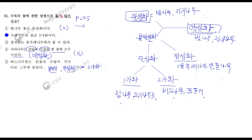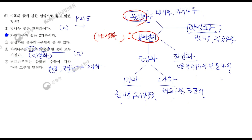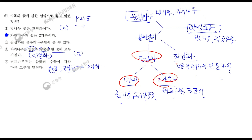그렇기 때문에 1번은 일단 맞고요. 완전화와 불안전화, 그 중에서 불안전화는 꽃받침, 꽃잎, 암술, 수술 네 가지 중에 하나라도 없는 것을 보고 불안전화라고 합니다. 대표적으로 버드나무류와 자작나무류가 있습니다. 근데 이건 크게 중요하지 않아요. 왜냐? 나머지 일가화와 이가화, 단성화, 잡성화 모두 불안전화에 들어가기 때문입니다.